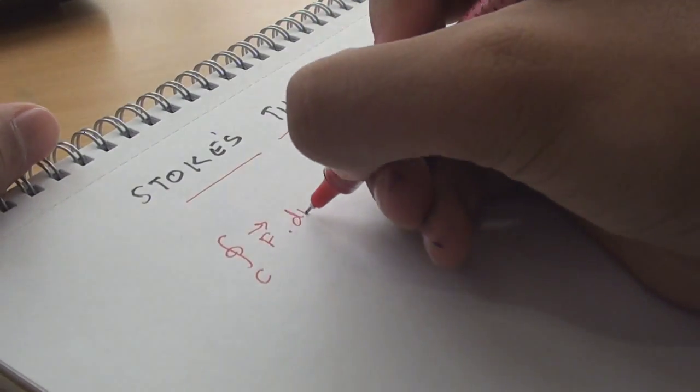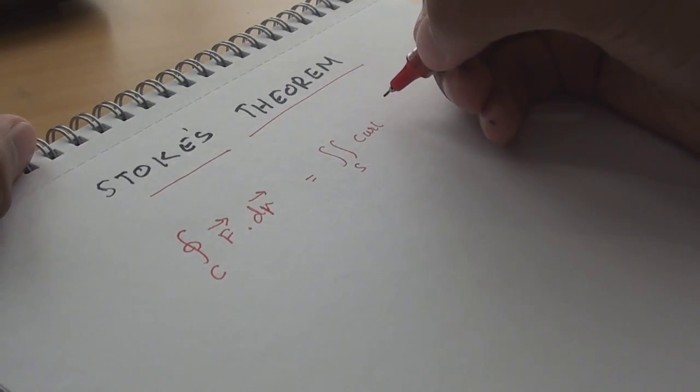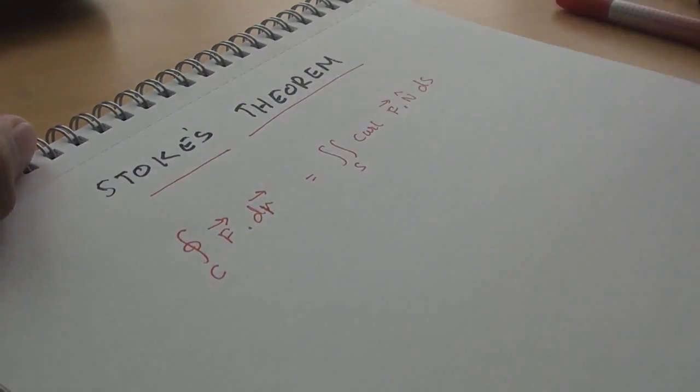Stokes theorem. It transforms line integrals into surface integrals and conversely. It pretty much generalizes Green's theorem and later becomes a special case of the former.